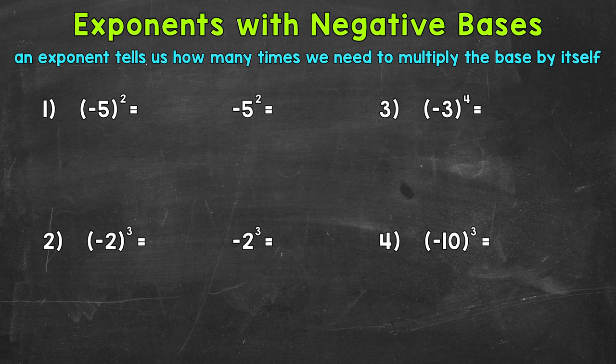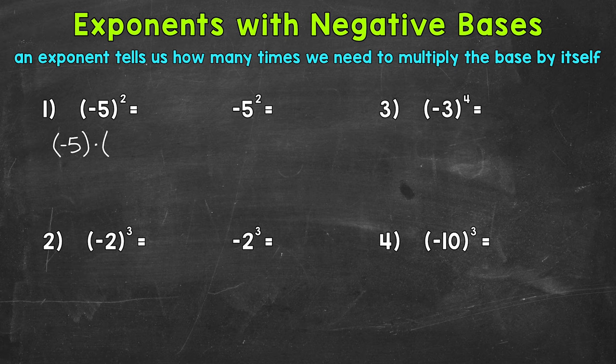Let's start with the negative 5 that's within the parentheses. Those parentheses indicate that the negative is included or is attached to our base. So we have negative 5 times negative 5. Let's write that out: negative 5 times negative 5. A negative times a negative equals a positive, so this is going to give us a positive 25.